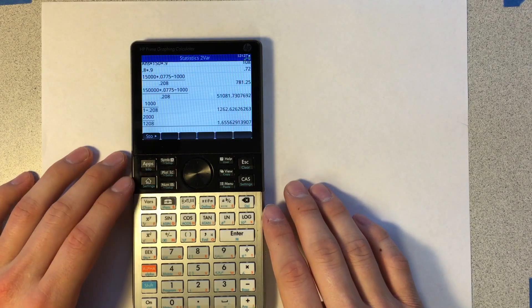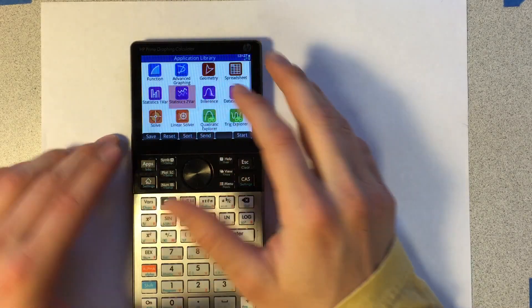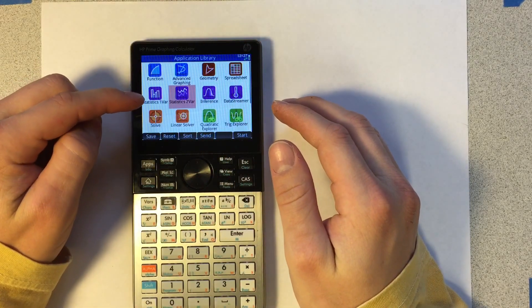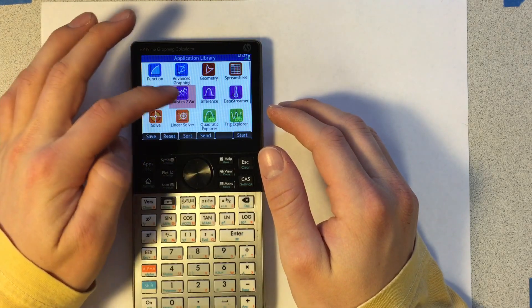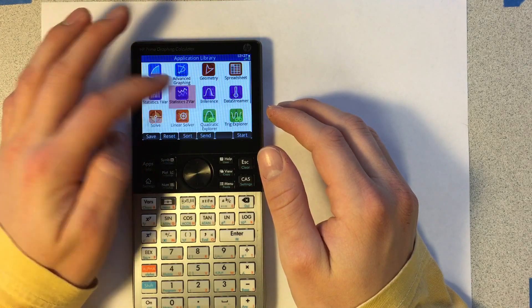So first, what we're going to do is go to apps. Statistics one variable if you just want to do a histogram or something like that of just single data points, but we want to do two data points, so we'll go to statistics two variable.